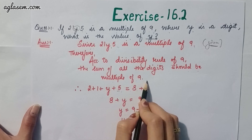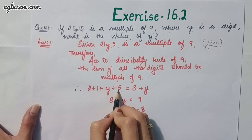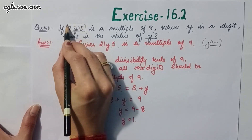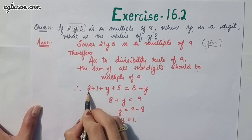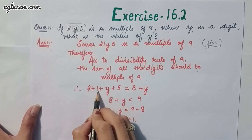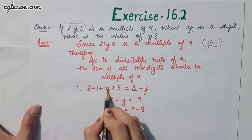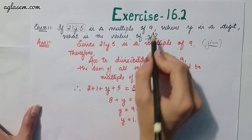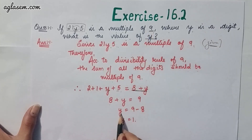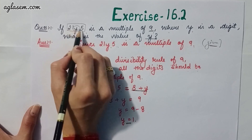Therefore, we have to find 2 + 1 + y + 5. That gives us 8 + y. So 8 + y = 9, which means y = 9 − 8, so y = 1. The answer is 2115.